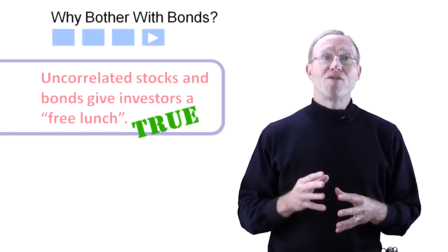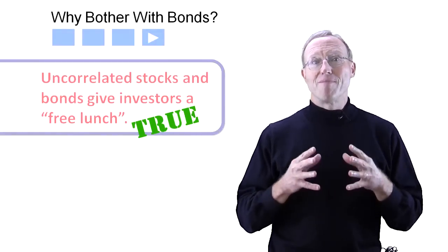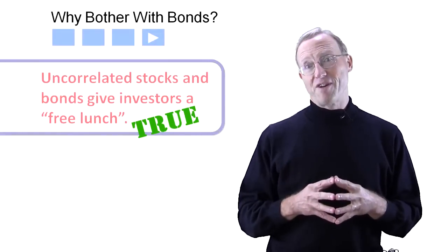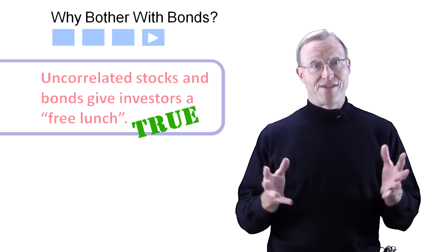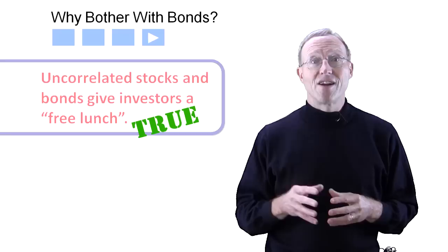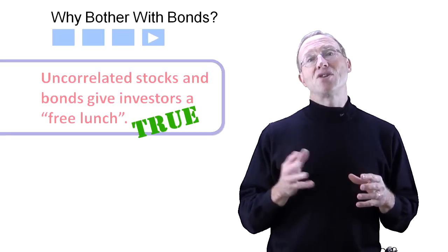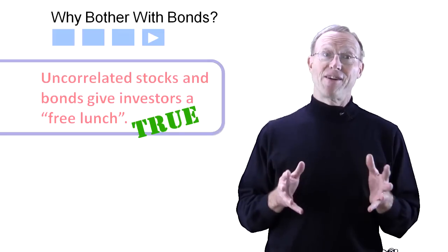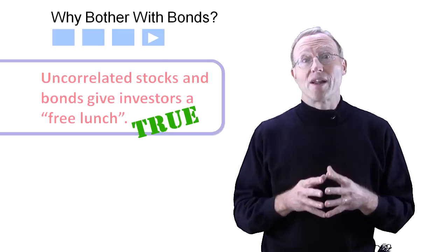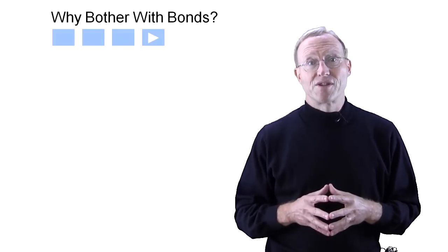This is true. The overall net result is to get more return for the same amount of volatility or risk. That's the free lunch. While moving in opposite directions at the same time would be ideal, being uncorrelated or even poorly correlated is very good. That's why high-quality bonds are an attractive diversifier.